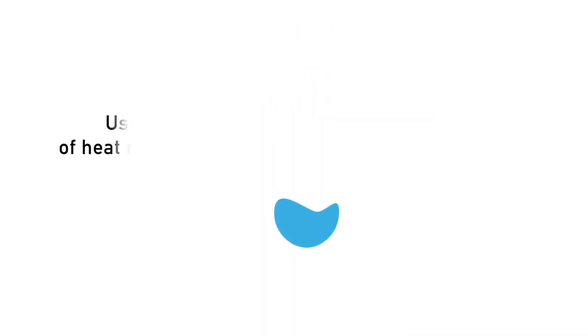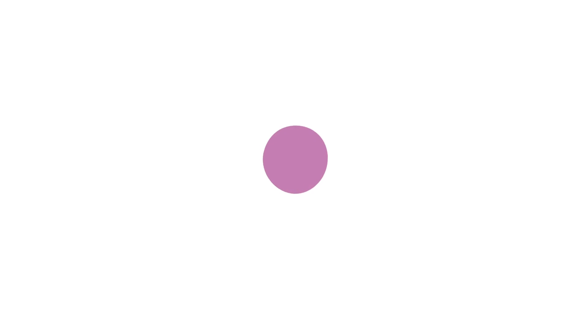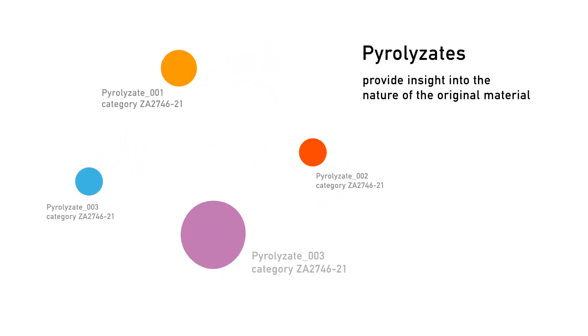Using this technology, a sufficient amount of heat reproducibly breaks down the organic bonds of a complex mixture into smaller and stable molecules, called pyrolyzates. The pyrolyzates formed and their relative intensities provide insight into the nature of the original material.